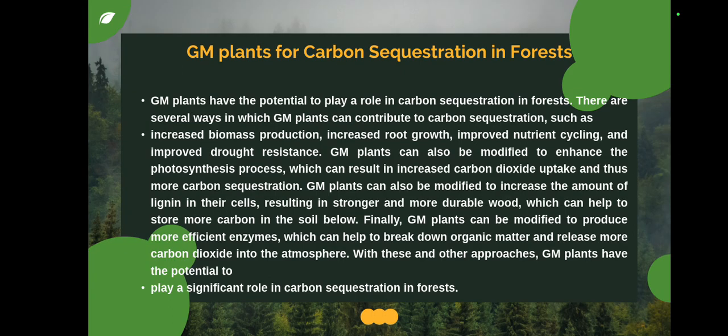Genetically modified plants have a significant role in carbon sequestration in forests. There are several ways GM plants contribute: increased biomass production, increased root growth, improved nutrient cycling, and improved drought resistance. GM plants can also be modified to enhance the photosynthesis process, resulting in increased CO2 uptake and more carbon sequestration. These plants can also be modified to increase the amount of lignin in their cells, resulting in stronger and more durable wood, which helps store more carbon in the soil. GM plants can also produce more efficient enzymes to break down organic matter.